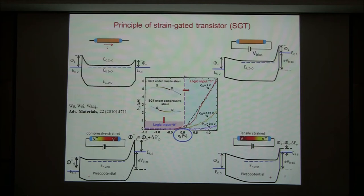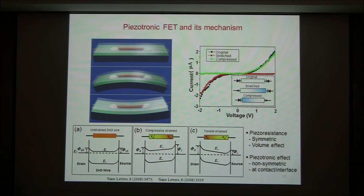This is a strain-controlled transistor. Previously this was a gate-voltage controlled transistor; this is a strain-gated transistor. This is the basic of the piezotronic transistor. This is the lateral device. If you look at the experimental case — there is a single nanowire here. On tensile strain, on compressive strain, you can see the change. The dark curve was the original.